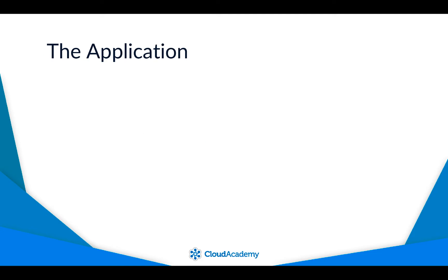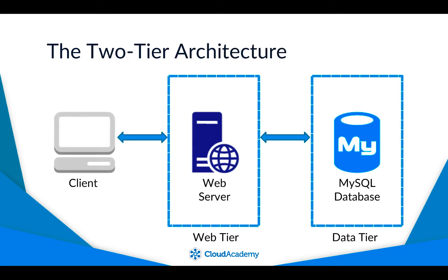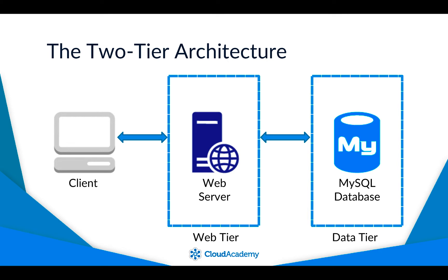A well-known open-source two-tier application is WordPress. WordPress is a very popular application for hosting websites and blogs. Many applications share a similar two-tier architecture, but WordPress is chosen because it's well-known. The application's two-tier architecture includes a data tier that houses a MySQL database for persistence, and a front-end web tier that hosts the WordPress website written in PHP. Clients connect to the web tier, and the web tier connects to the data tier to store and retrieve data.